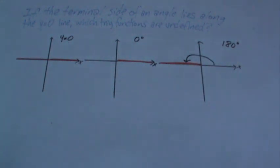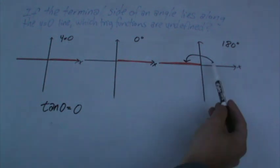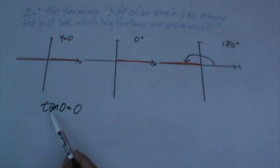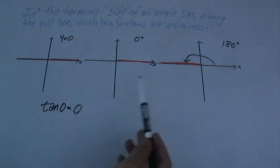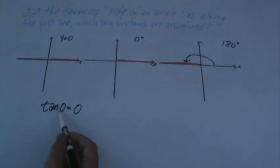So what functions are undefined? So is tangent undefined at 0? Tangent of 0 is 0. What's the reference angle of 180 degrees? 0. So tangent of 0 is 0. We're basically talking about the same angle in both cases. Tangent of 0 is 0. So what is undefined then?